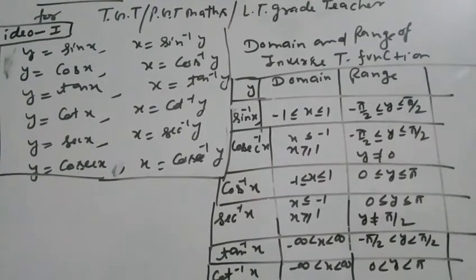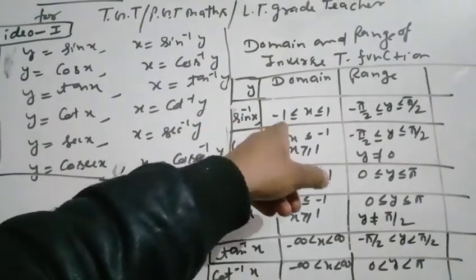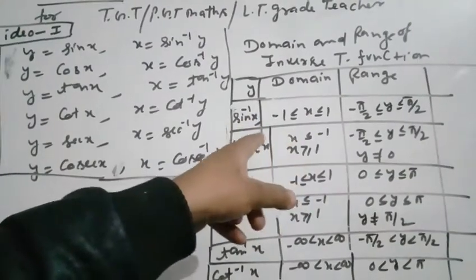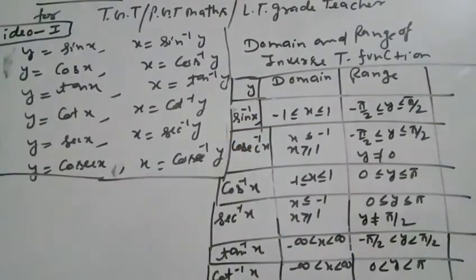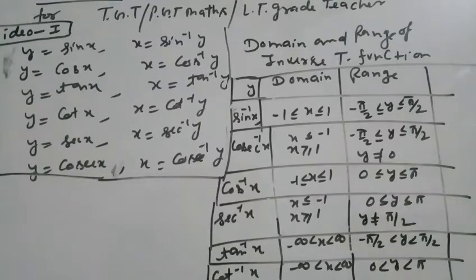The domain and range of the inverse trigonometry functions. For sin inverse x, the domain is where x lies from minus 1 to plus 1, which means x is greater than or equal to minus 1 and x is less than or equal to 1. The range is minus pi by 2 to pi by 2.